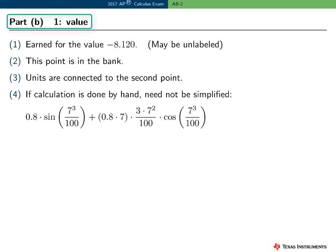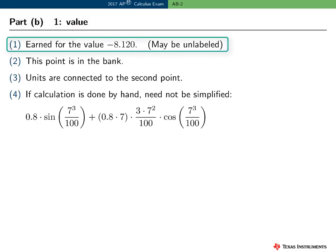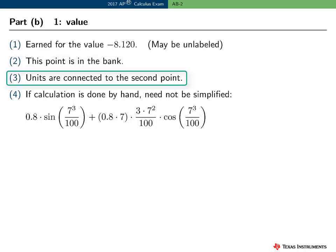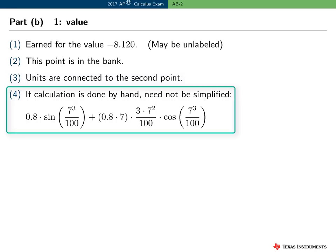In Part B, the first point was for finding the value of f prime of 7. The point was earned for presenting the value minus 8.120 or minus 8.119, even if the value was unlabeled. If this point is earned, the student cannot then lose it — at the reading, we say that the point is in the bank. The units are connected to the second point and the meaning of the value. The student could present an exact symbolic numerical answer, but it isn't necessary here since this is a calculator active question, and doing so presents more of a chance of making an error.